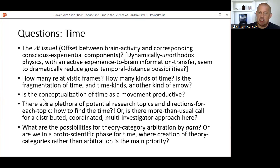Relatedly, perhaps, does the conceptualization of time as a movement rather than as a static set of coordinates produce constructive, productive scientific forward movement? Then there are a plethora of potential research topics and projects and directions for each of those. How to find the time, so to speak? Put differently, is there more than usual call for distributed, coordinated, multi-investigator approach to the question of time? Finally, what are the possibilities and prospects for theory-category arbitration by data, whether that data is collected by experiments or by other means? Should we look to this, or are we more in a proto-scientific phase for time, where creation of categories rather than arbitration between them is the main priority?